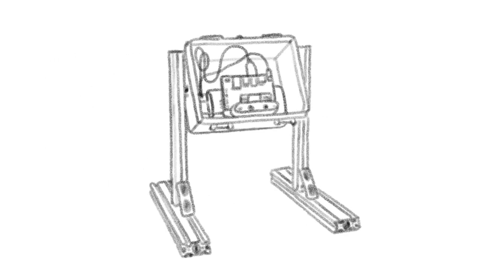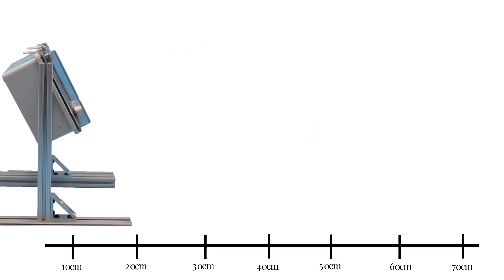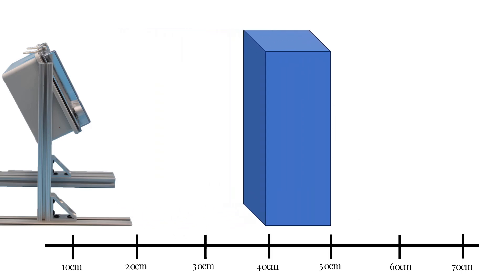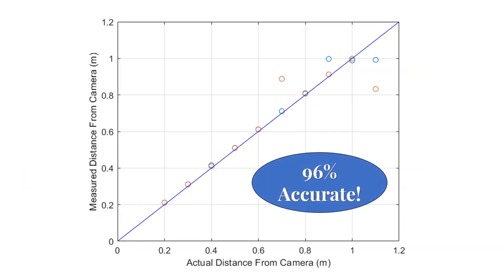We created a prototype based on our design and tested its efficacy. The main question we wanted to address is: can it accurately measure manure storage volume? In an experimental setup, we tested the code's ability to accurately measure the distance of an object from the stereo camera. The results show that the device is 96% accurate for distances below one meter.